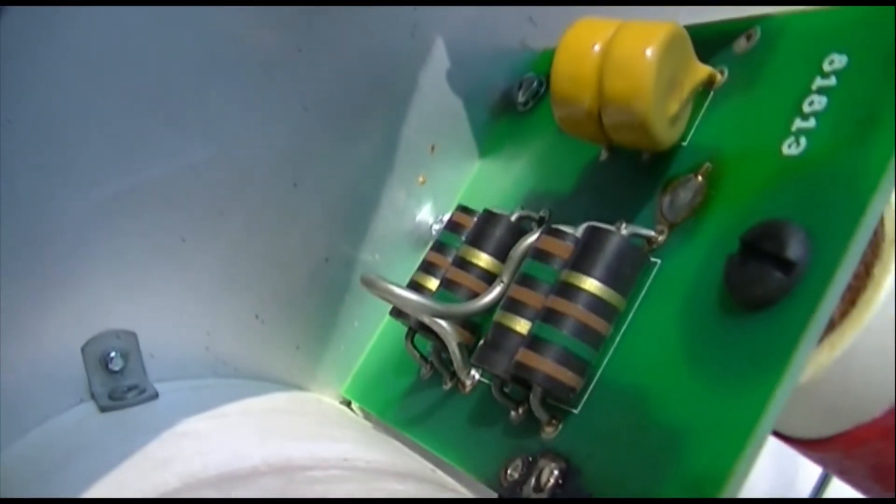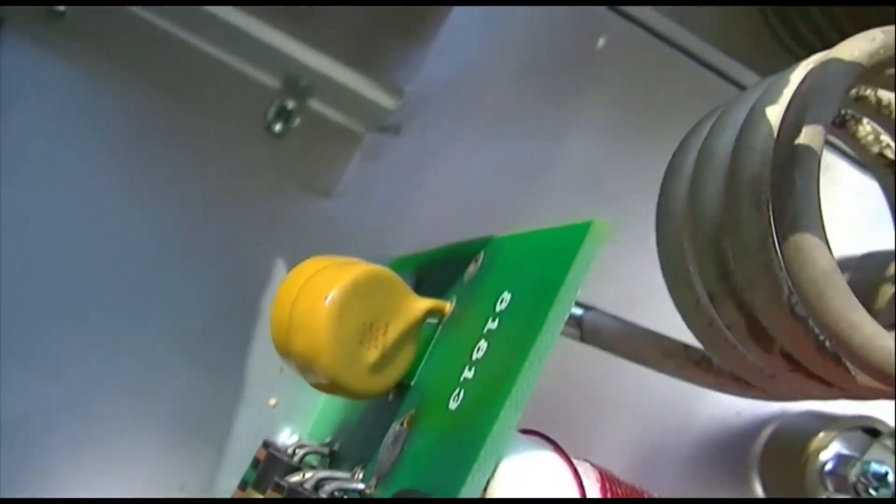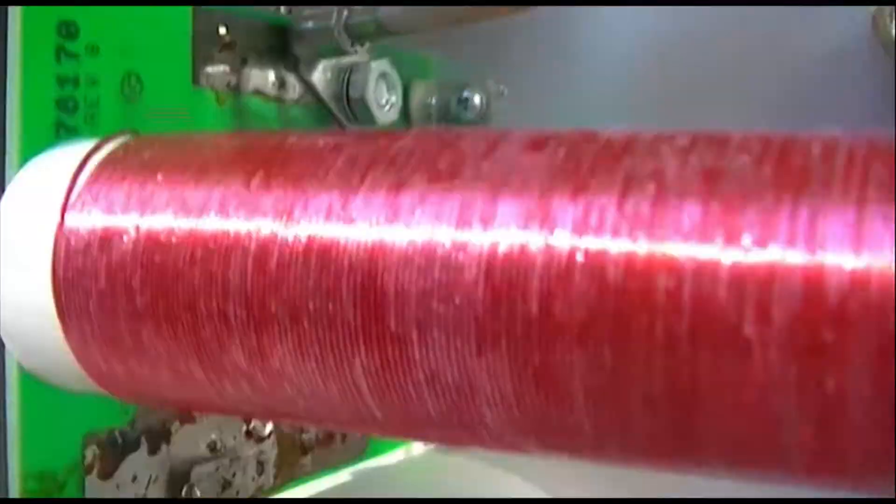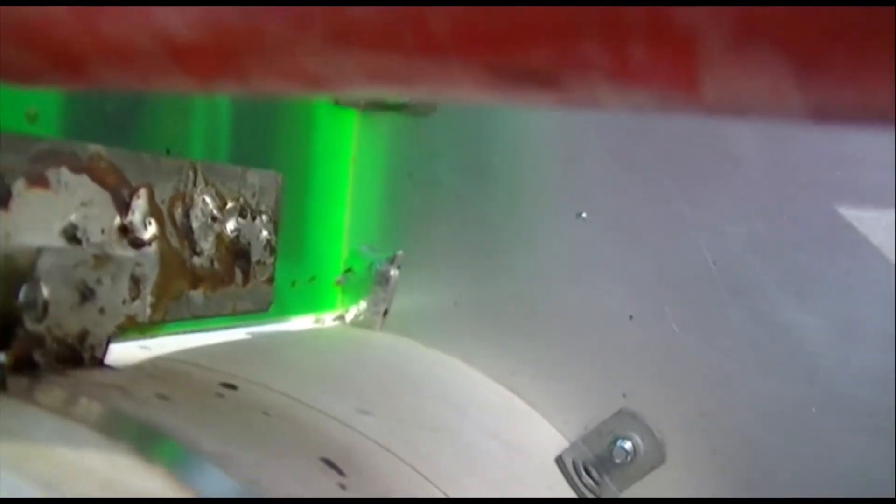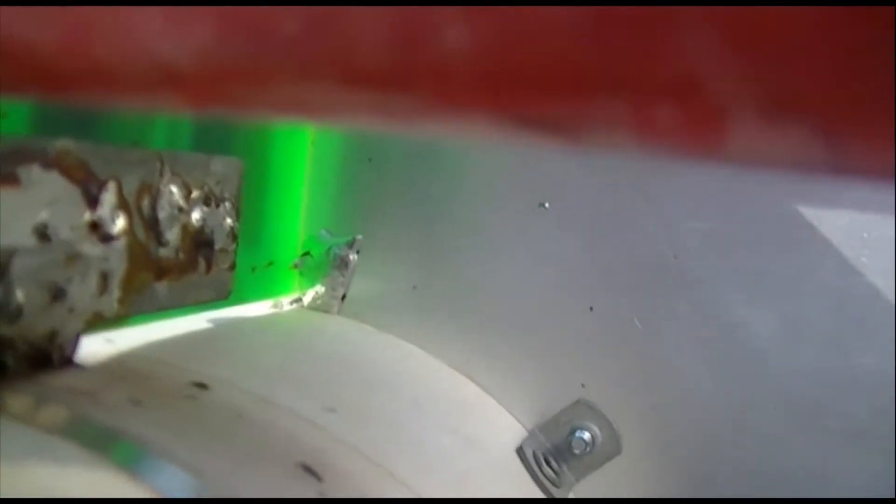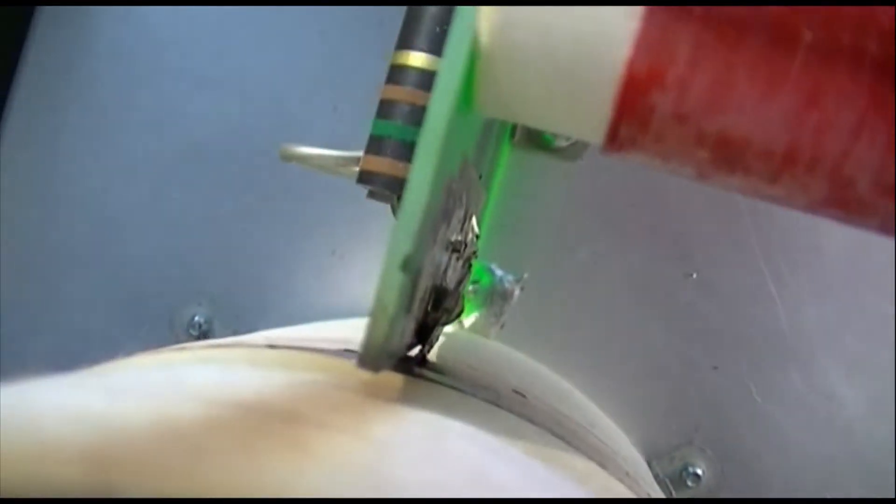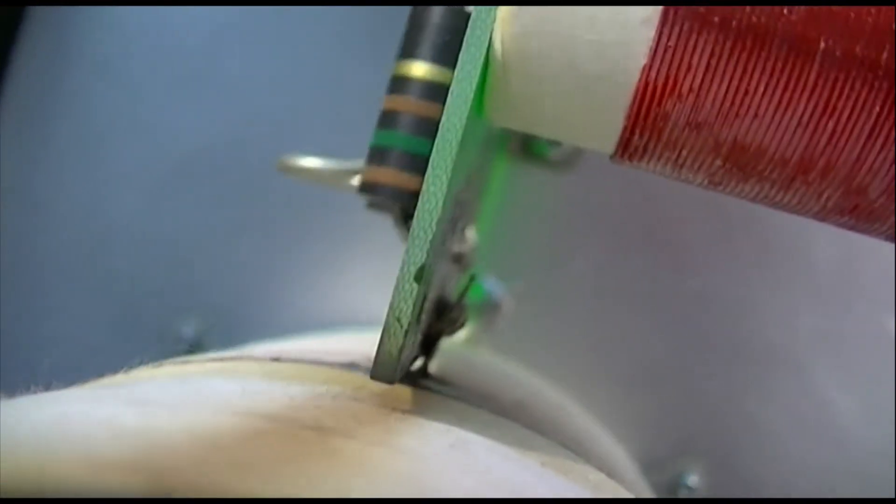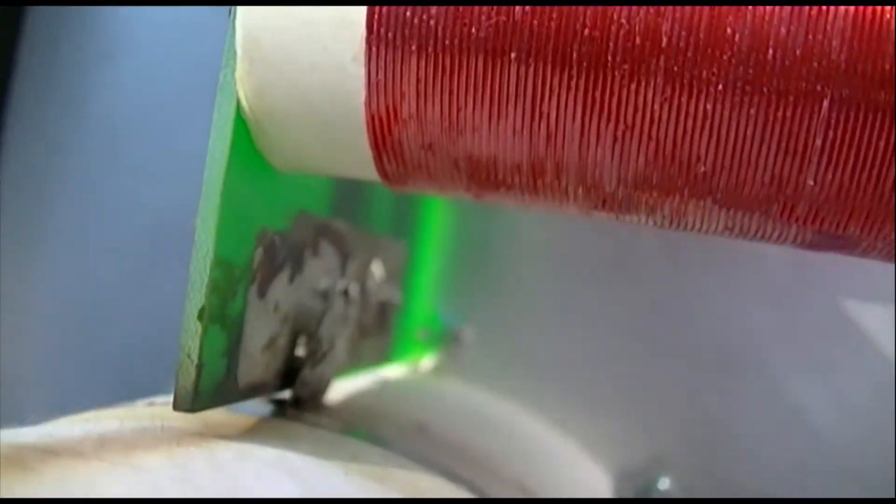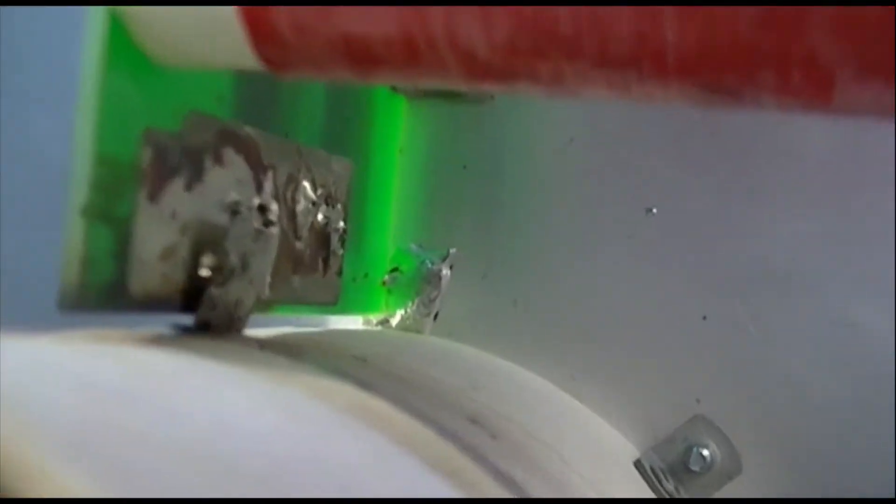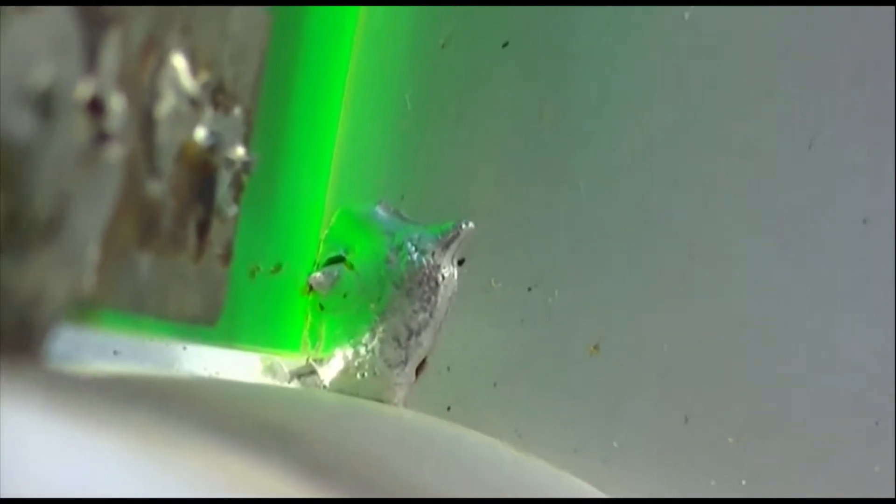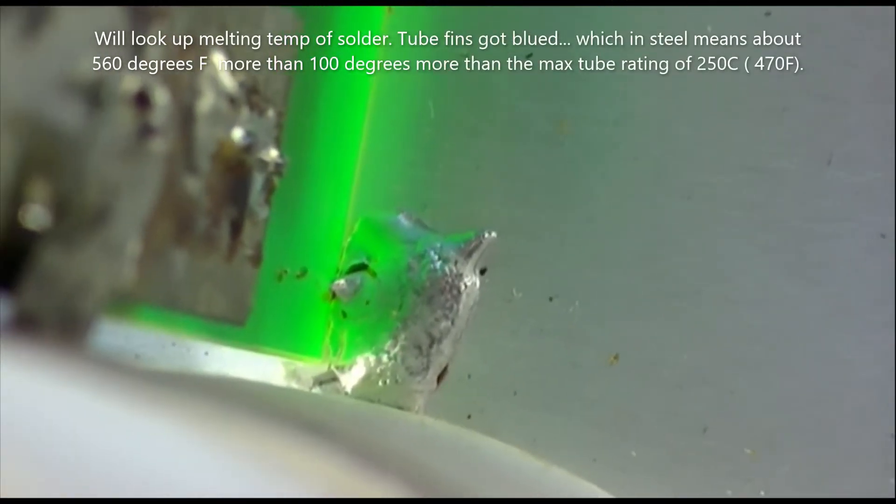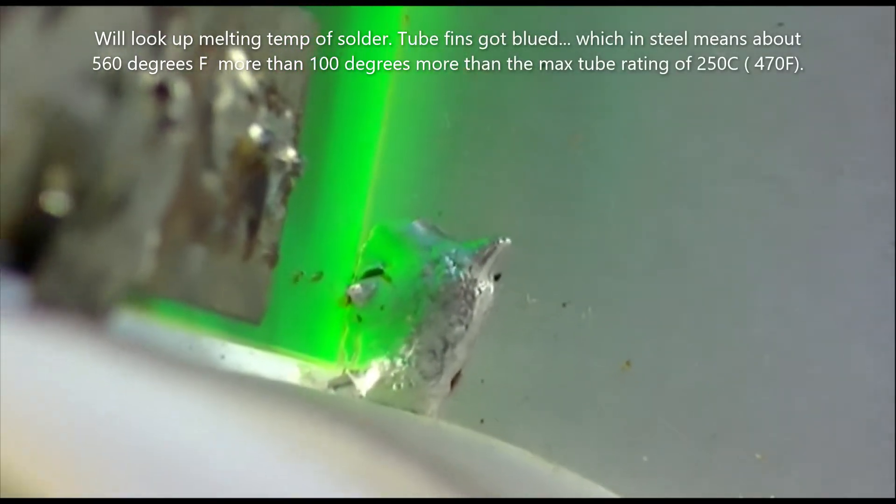Everything looks okay on here until we get to here where the plate connection for the tube, it's soldered to that board, and you can see that it's gotten hot enough to unsolder it. And there is a telltale puddle of solder. That little mother got hot.